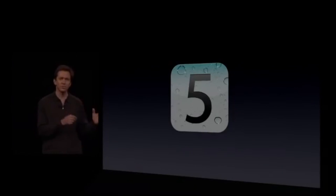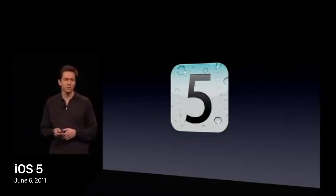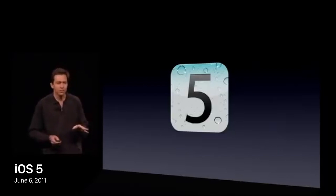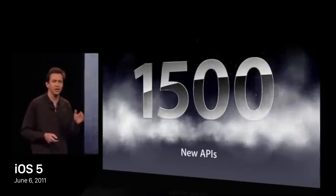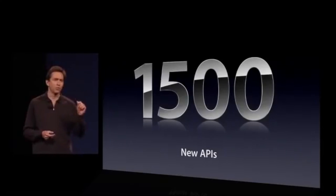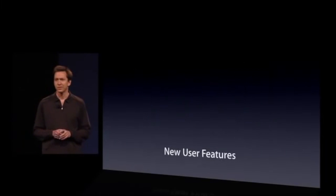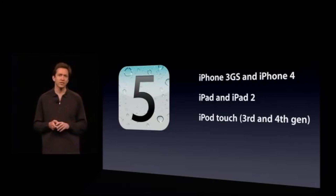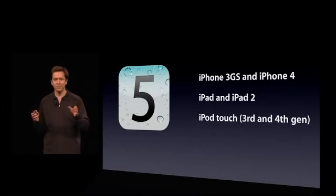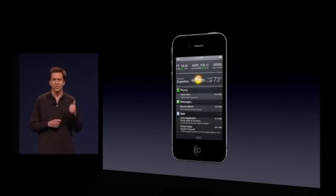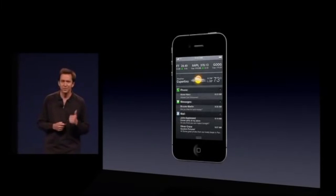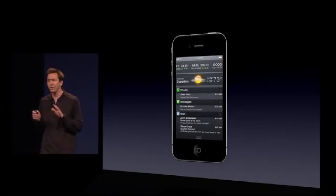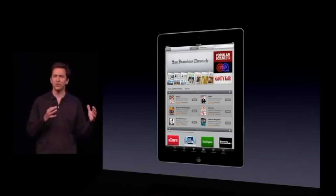Apple announced iOS 5 on June 6, 2011 at its annual Worldwide Developers Conference event, and it was released to the public on October 12, 2011 alongside the iPhone 4S. Apple did not drop support for any devices with this release, as this had already been done with the release of iOS 4.3 seven months earlier. Some of the features introduced in iOS 5 were Notification Center, Newsstand, and Reminders.